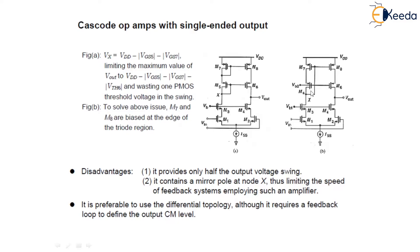What we have done is that M7 and M8 are biased at the edge of the triode region. Similarly, this applies for a folded cascode opamp as well.